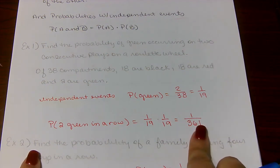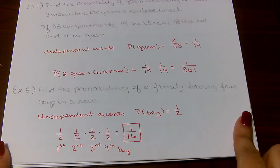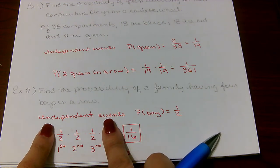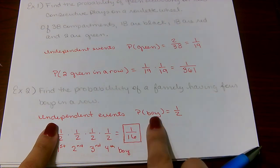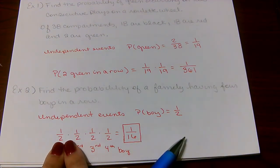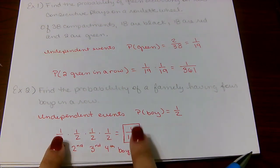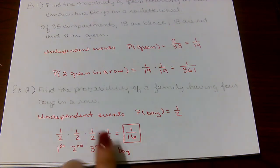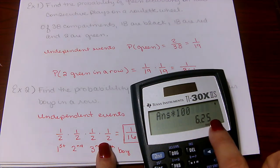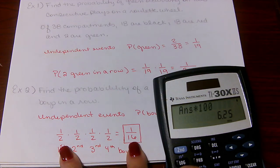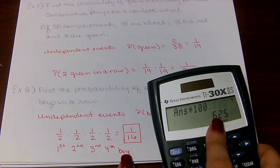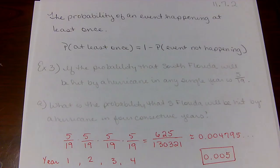Problem 2: find the probability of a family having four boys in a row. Again, independent events, because one pregnancy does not impact the outcome of a second pregnancy. The probability of having a boy is 1/2, since there are two genders. So having four boys is 1/2 × 1/2 × 1/2 × 1/2 = 1/16. Multiplying by 100, that's 6.25%. So out of all parents who have four children, about 6.25% will have either four boys or four girls.